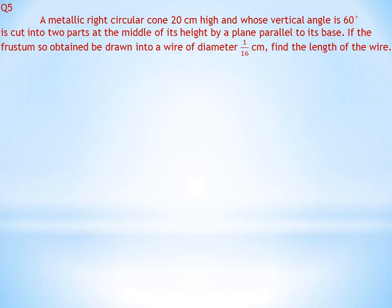Question 5: A metallic right circular cone 20 cm high with vertical angle 60° is cut into two parts at the middle of its height by a plane parallel to its base. If the frustum so obtained is drawn into a wire of diameter 1/16 cm, find the length of the wire. Here we need to use a trigonometric ratio. The cutting plane divides the height into 10 cm and 10 cm, so the frustum height H = 10 cm.